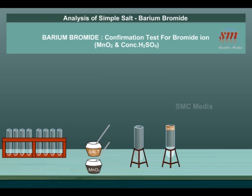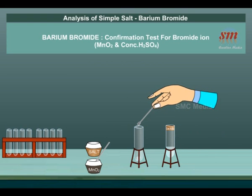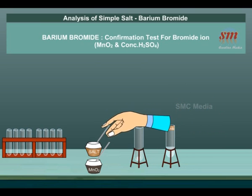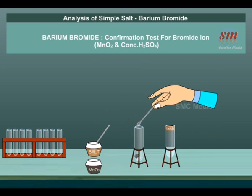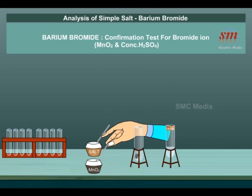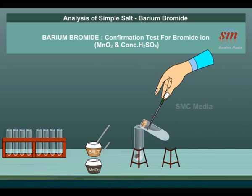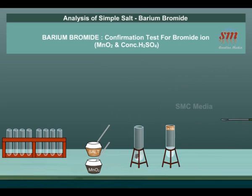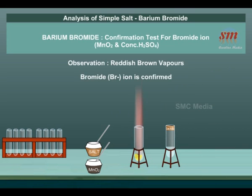Confirmation tests for Br⁻ ion — Action of MnO₂ and concentrated H₂SO₄: A small quantity of salt is taken in a test tube. A pinch of MnO₂ and concentrated H₂SO₄ are added. Reddish brown vapors of Br₂ with pungent smell are evolved, which turns starch yellow. Bromide Br⁻ ion is confirmed.